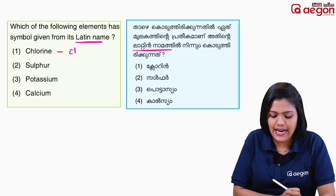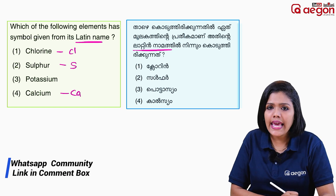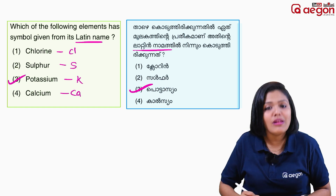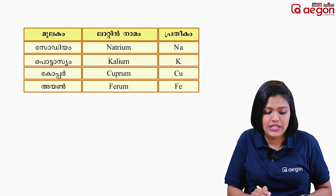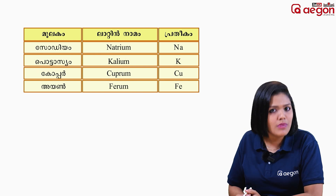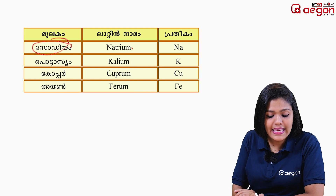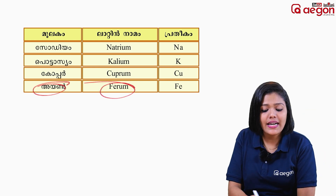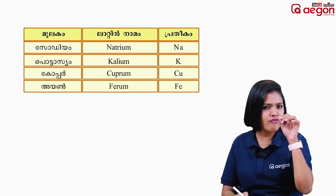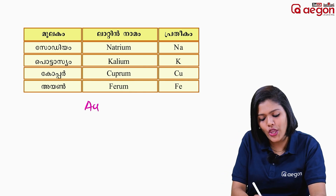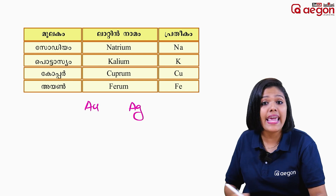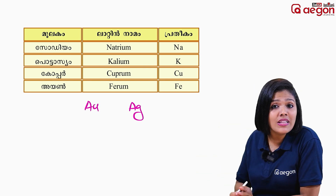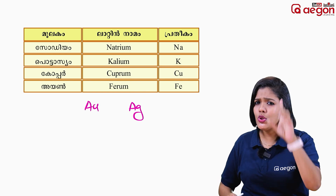Let's look at the symbols: chlorine is Cl, sulfur is S, calcium is Ca, and potassium is K — not P. Potassium's symbol K comes from its Latin name 'Kalium.' So potassium's symbol is derived from its Latin name. Other examples: sodium's symbol Na comes from 'Natrium,' copper's Cu from 'Cuprum,' iron's Fe from its Latin name, gold's Au from 'Aurum,' and silver's Ag from its Latin name.